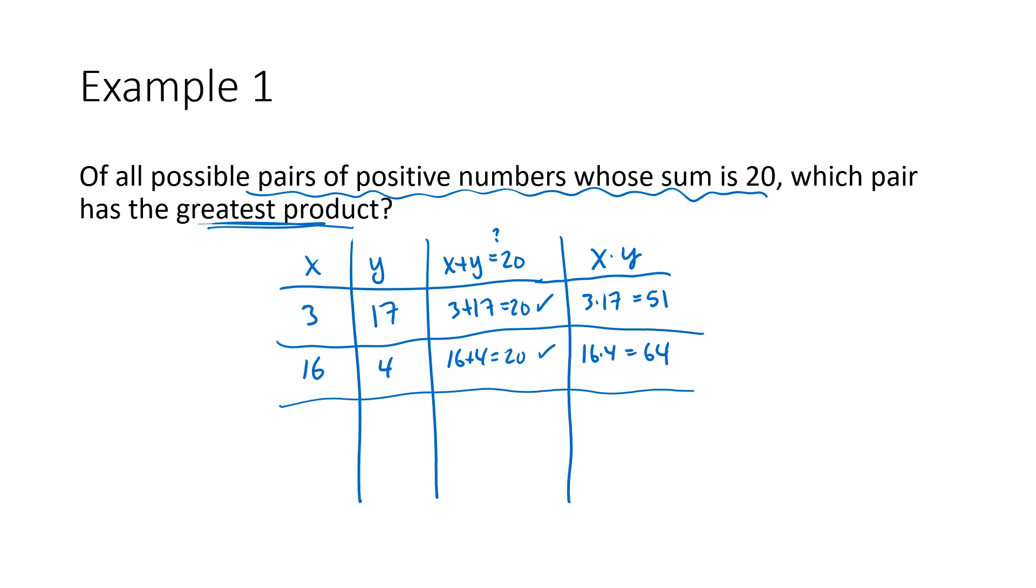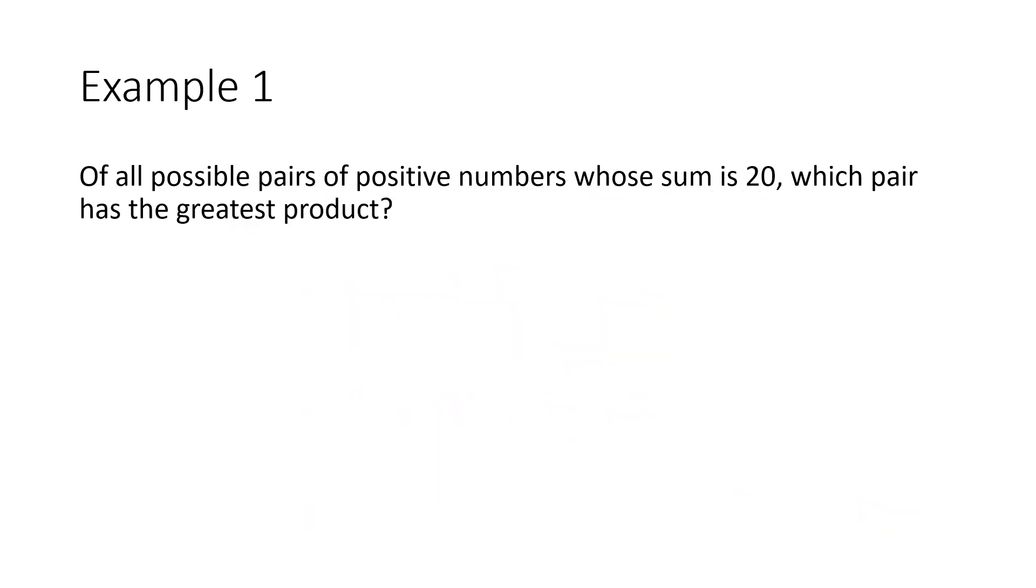What about 9.5 and 10.5? They don't have to be whole numbers. So 9.5 plus 10.5, does that really equal 20? Yes. And then on my calculator, I might go ahead and type in 9.5 times 10.5, and I get 99.75. I might continue in this way, experimenting, trying to figure out whether I can find a bigger product. But even if I stumble on what you might already intuit is going to be the correct answer, which is 10 and 10 with a product of 100, how do we know that this is the greatest product? It sort of seems intuitive, but how do we actually know that that is the greatest?